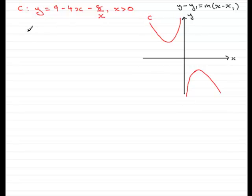So, let's say that when x equals 2, we'll find out what y is by substituting 2 into the equation. So we'd have 9 minus 4 times 2 minus 8 over 2. So we've got 9 minus 8, which is 1. 1 take away 4 is going to be minus 3.